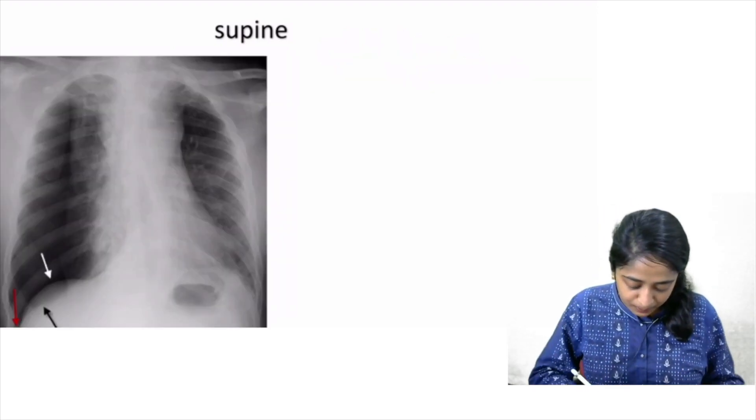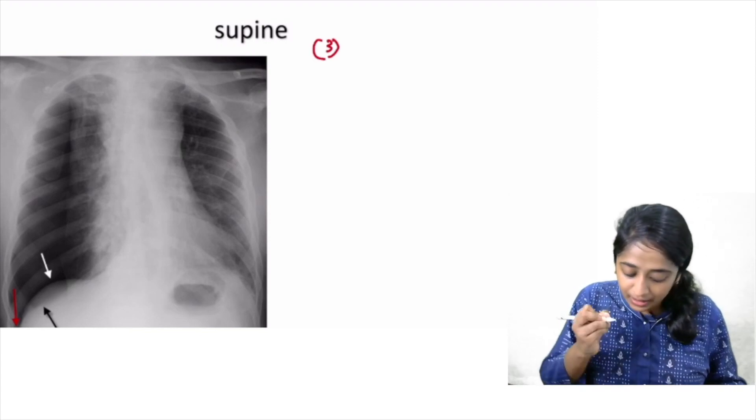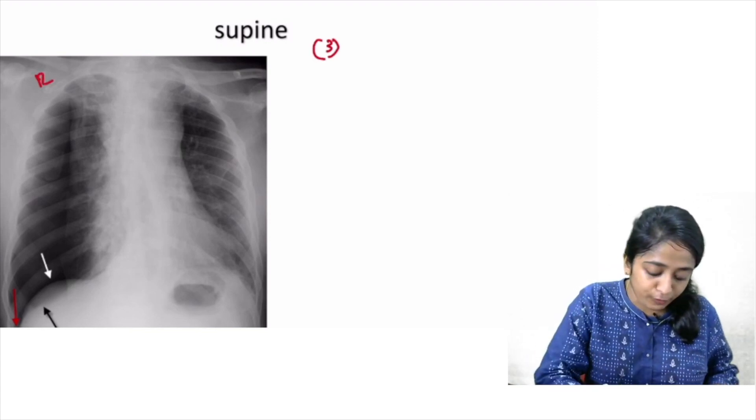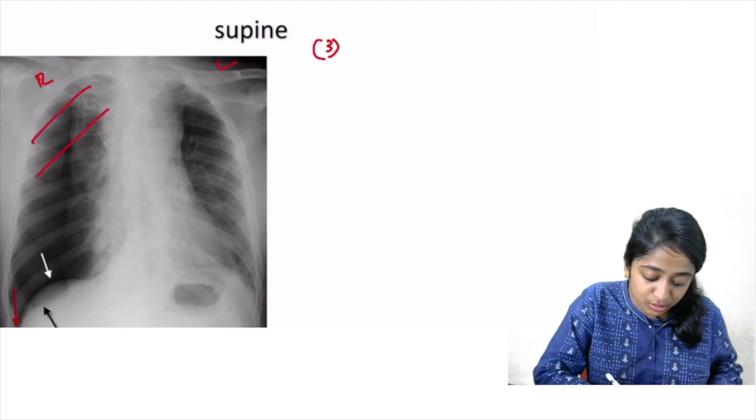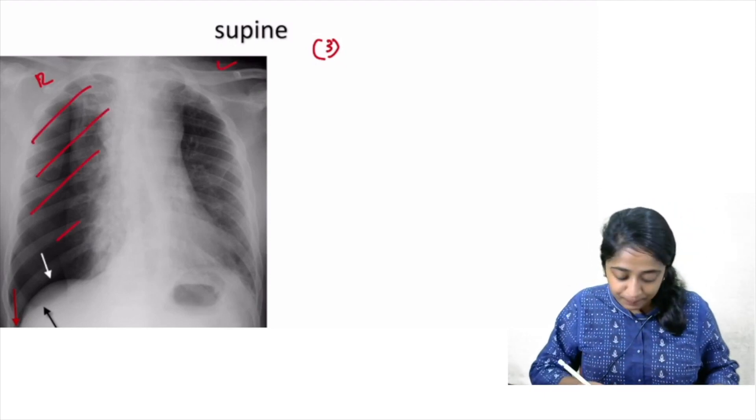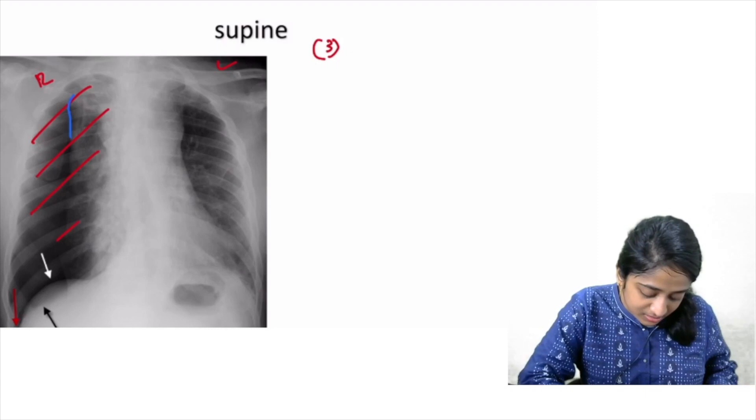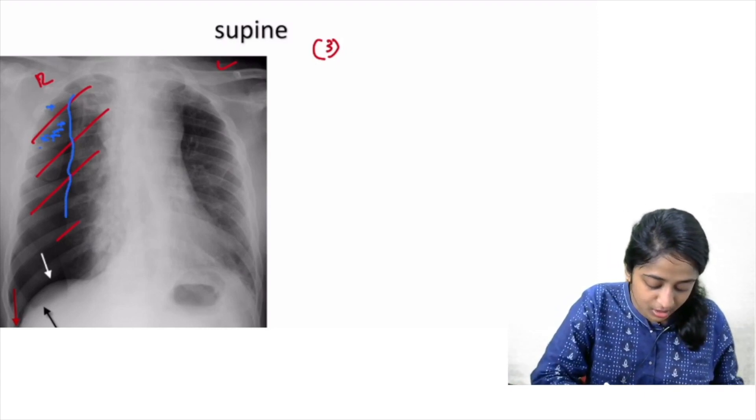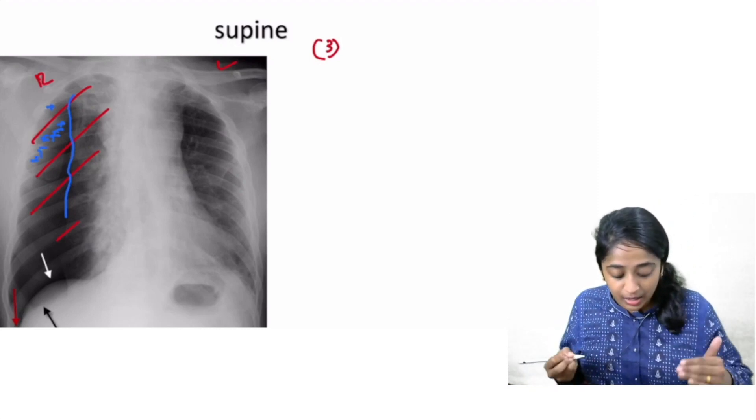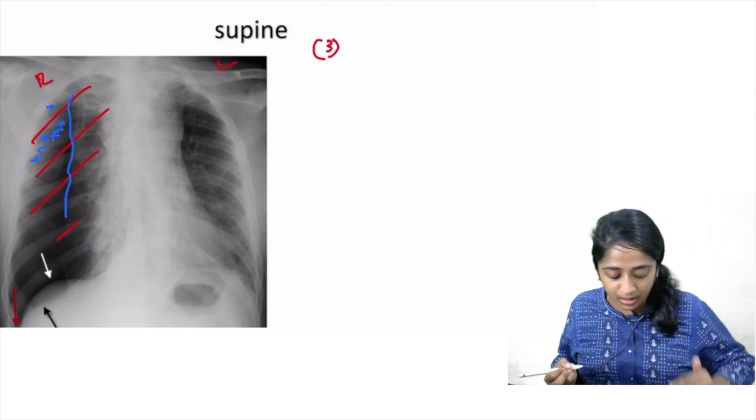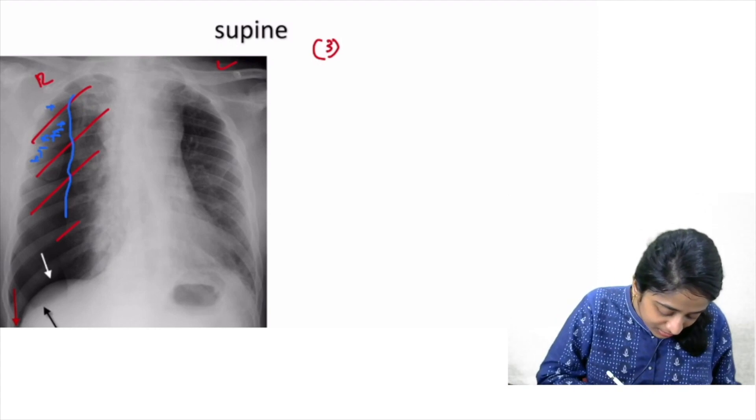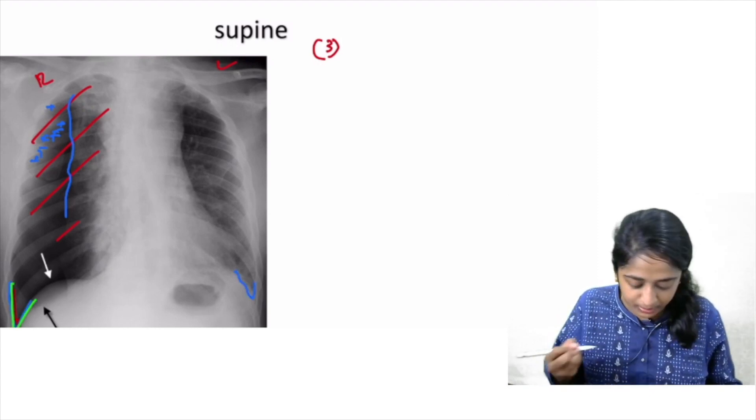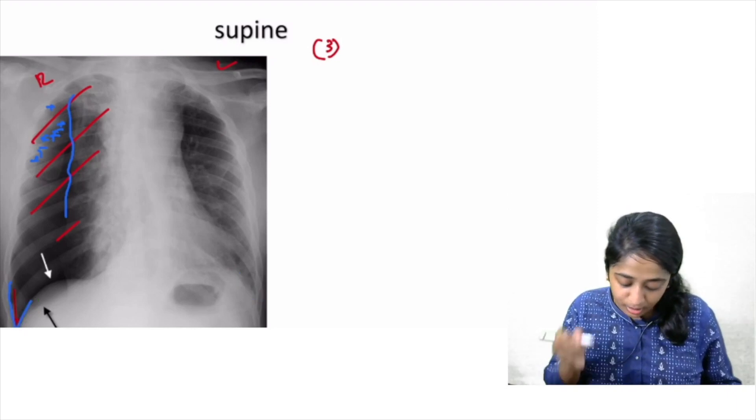Now let's come to the third important sign. So this is very apparent here. Comparing the right and the left lung field, there is increased lucency on the right side. More importantly, I can see the displaced visceral pleural line and distal to this, there are no lung markings, no vascular markings. Now what else is apparent when you go deeper down? You can appreciate the deep sulcus sign. Compare the deep sulcus sign you can appreciate.